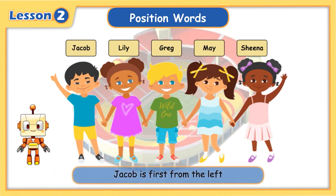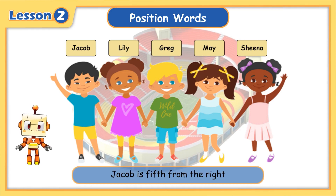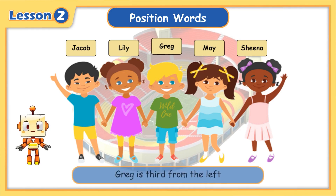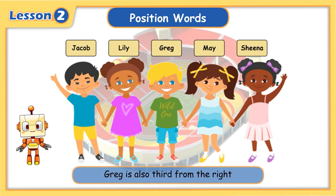Jacob is first from the left. Jacob is fifth from the right. Greg is third from the left, and Greg is also third from the right.